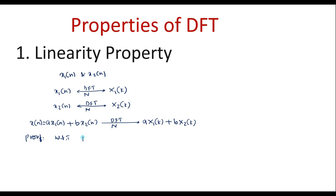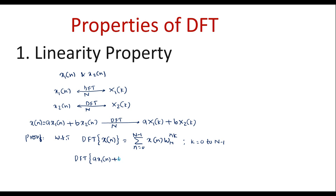We know that the DFT of any discrete signal x of n is given by the summation from n equals 0 to N minus 1 of x of n times W_N power nk, where k varies from 0 to N minus 1. Here x of n is nothing but a·x1 of n plus b·x2 of n, so the whole expression is that summation multiplied with W_N power nk.